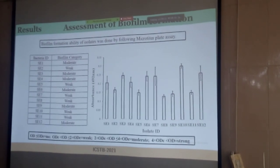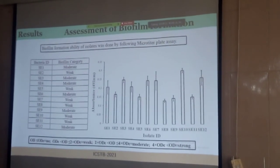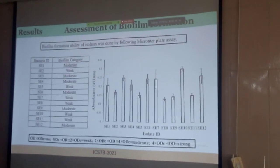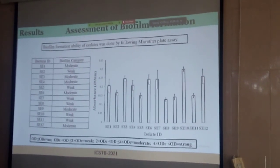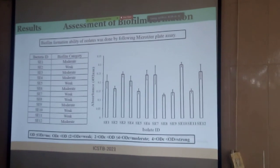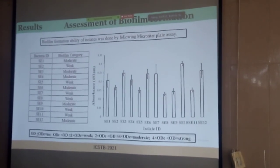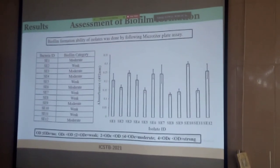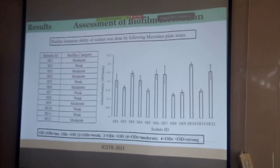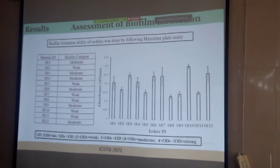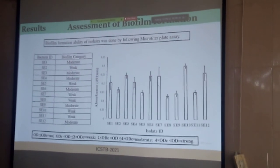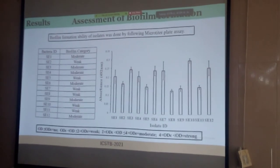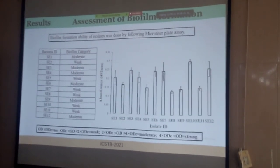We also performed a biofilm formation assay using a microplate assay. We stained the biofilm using crystal violet and measured absorbance at 492 nanometers. We classified our isolates — only 12 isolates were found to be biofilm producers and others were non-biofilm formers. Biofilm formers were classified as weak, moderate, or strong on the basis of the criteria mentioned.